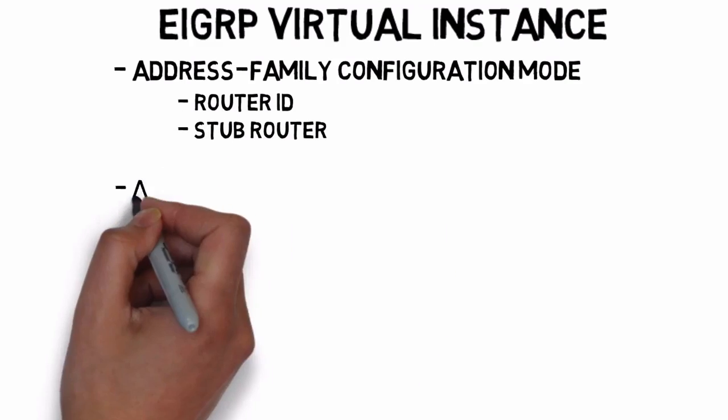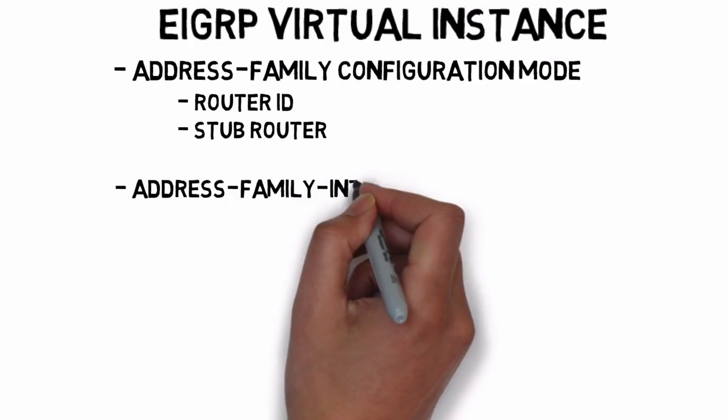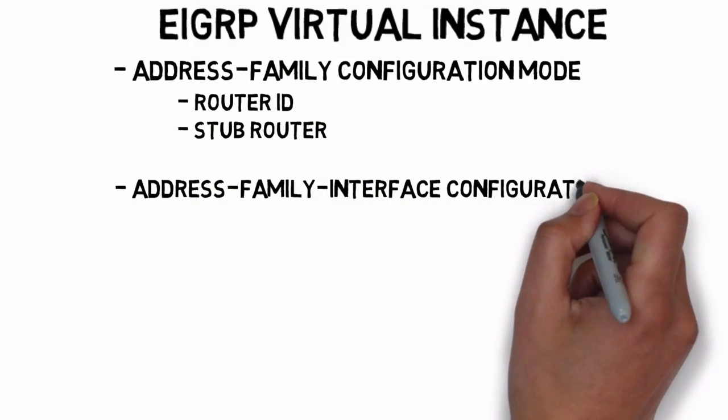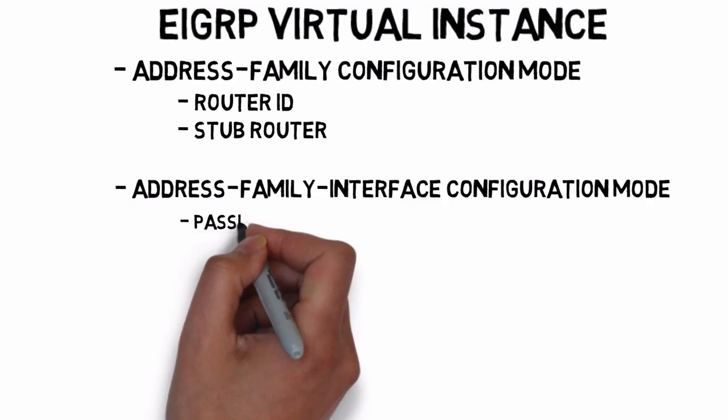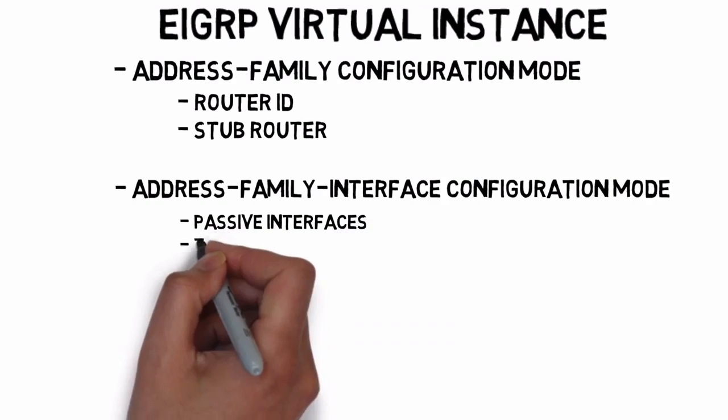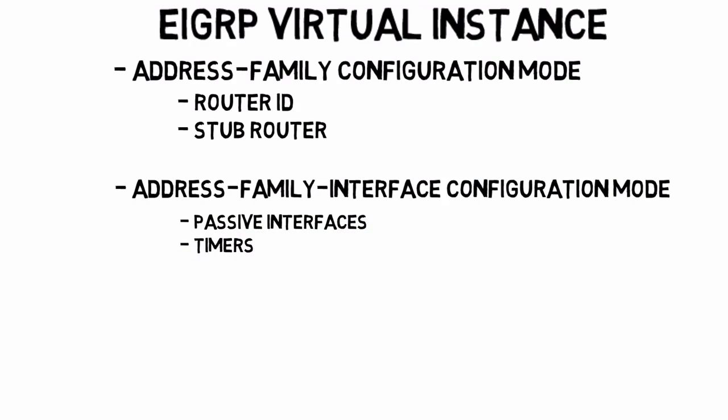Another configuration mode is address family interface configuration mode. First, we go into address family configuration mode, and then we go into address family interface configuration mode. Commands entered here are the types of commands that you might enter under interface configuration mode with traditional EIGRP configuration — for example, specifying that certain interfaces are passive interfaces, or setting up timers for interfaces.